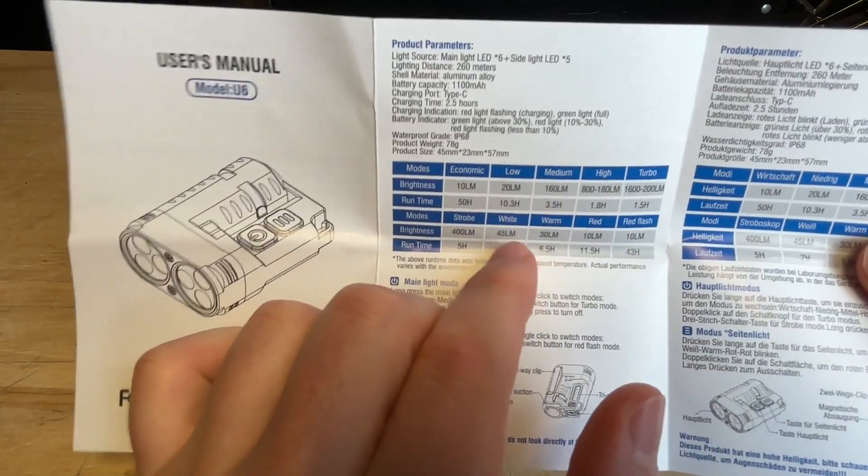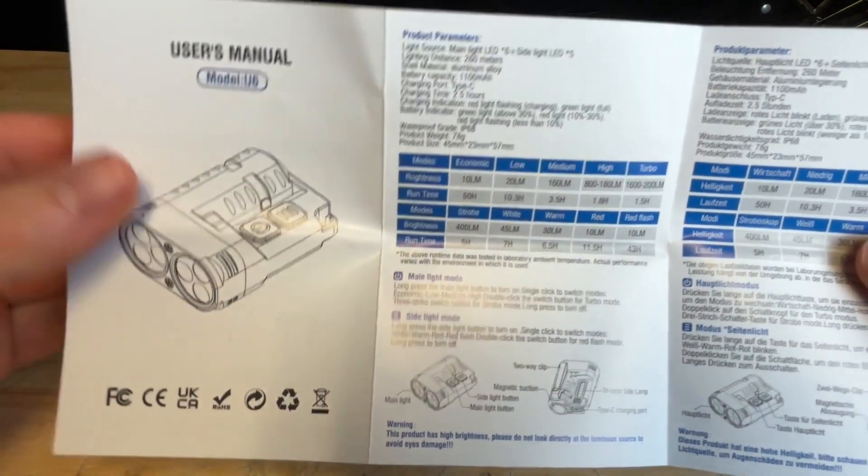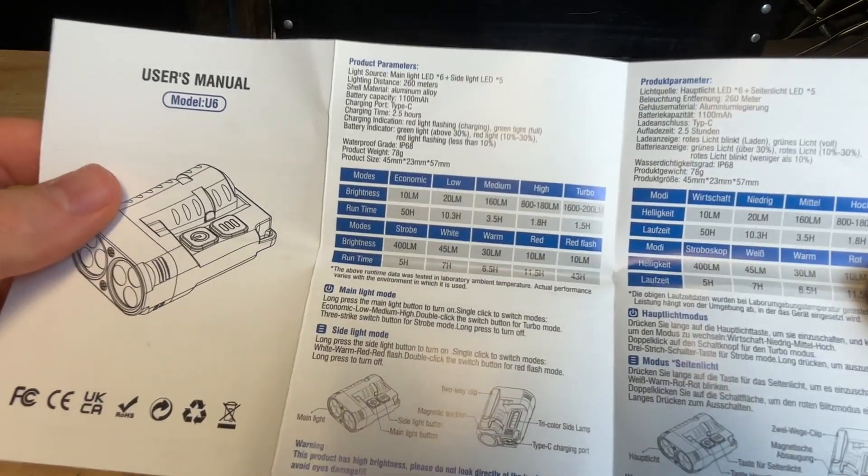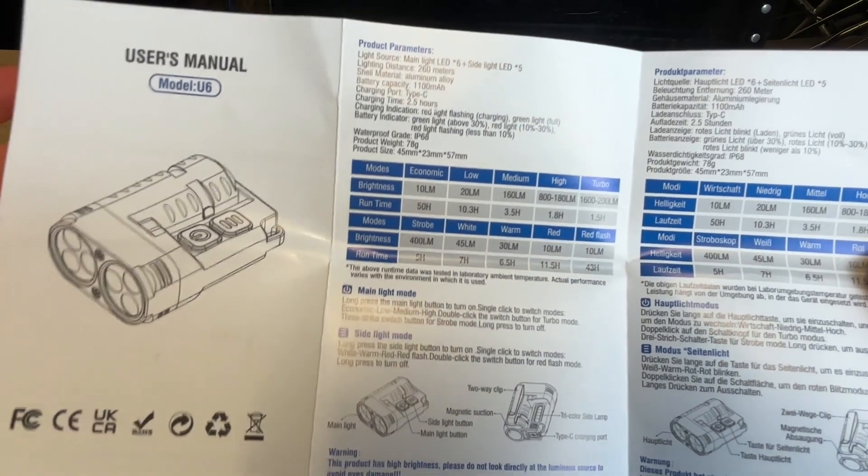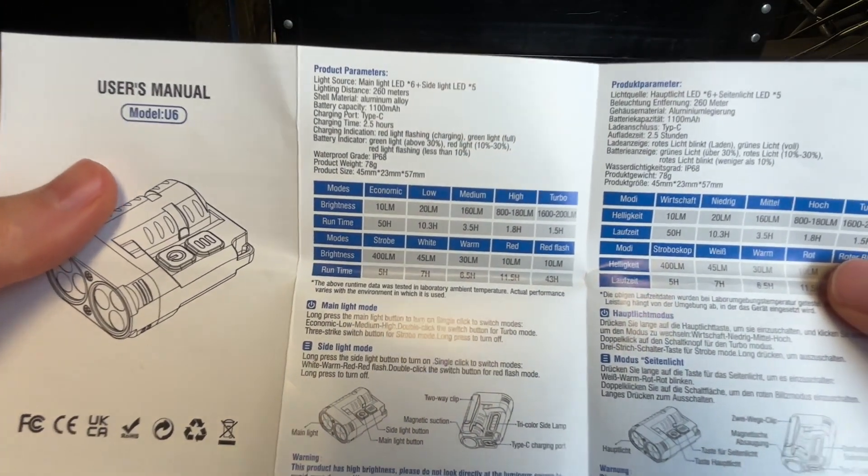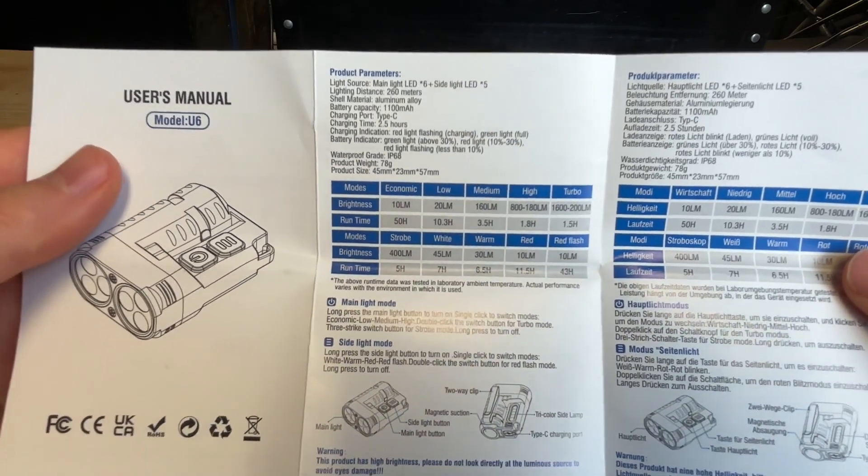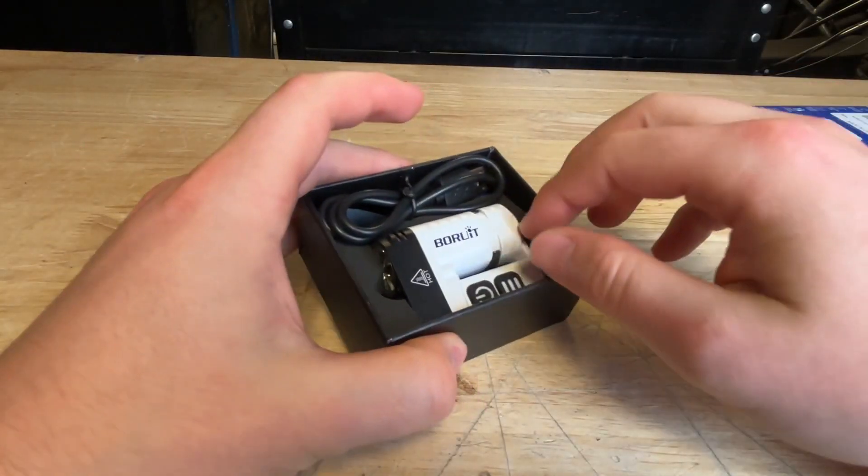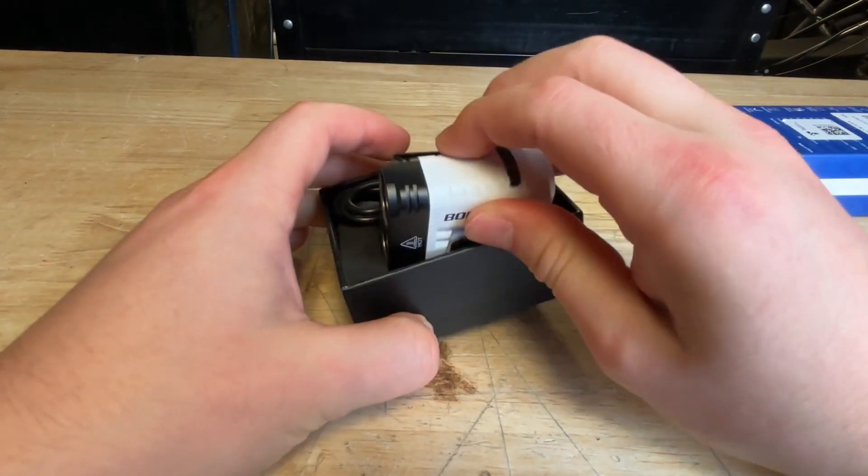That's something interesting to think about when you actually look at these flashlights here. So of course, the three colors are going to be white, warm, and red. That's not too crazy there. Warm is just going to depend on where you are. If you're hiking through the snow, you're going to want a warm light. If you're hiking through, say, like a clear warm forest, you're probably going to want a white light to better see colors. It kind of depends on what you're trying to really do there.